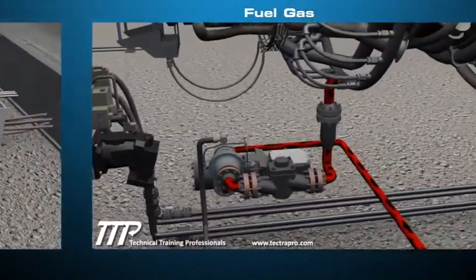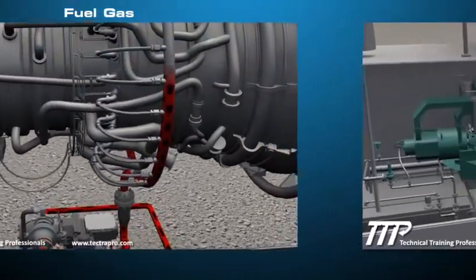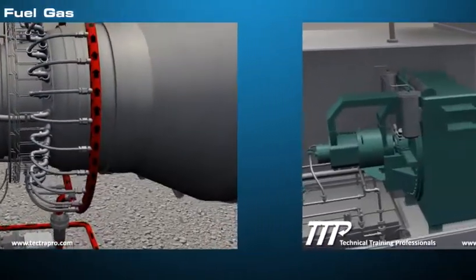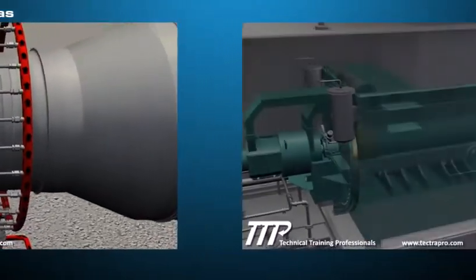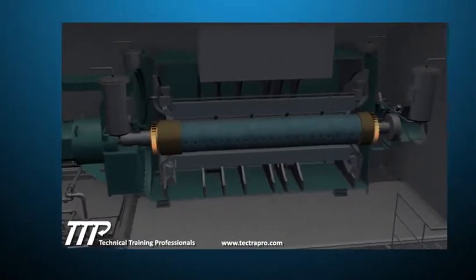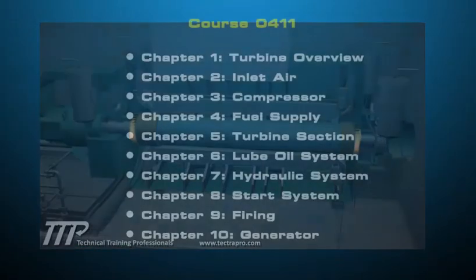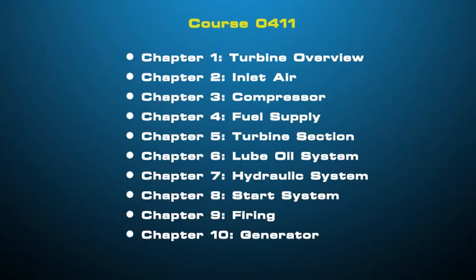These systems work together to produce torque that will drive an electric generator. Currently, the LM6000 gas turbine includes the chapters listed.